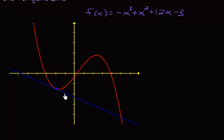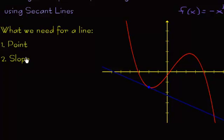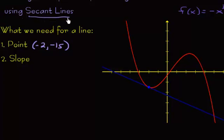Because the tangent line is a line, to find its equation we need two things. First, we need a point — and we have that. Second, we need the slope. The point we have is negative 2 comma negative 15, so we already have that point. Now we need to find the slope, and that's where these secant lines come in.